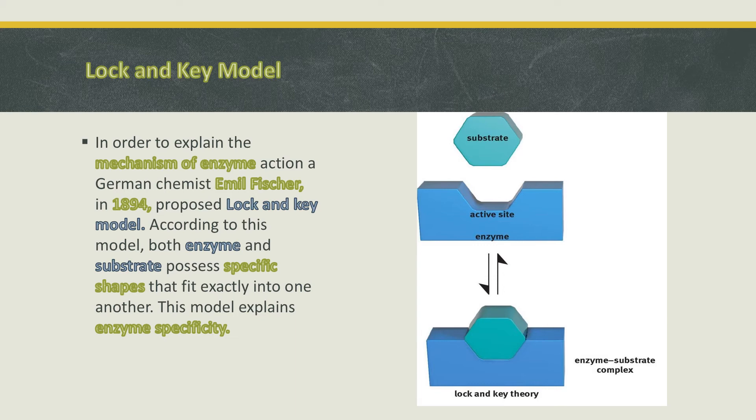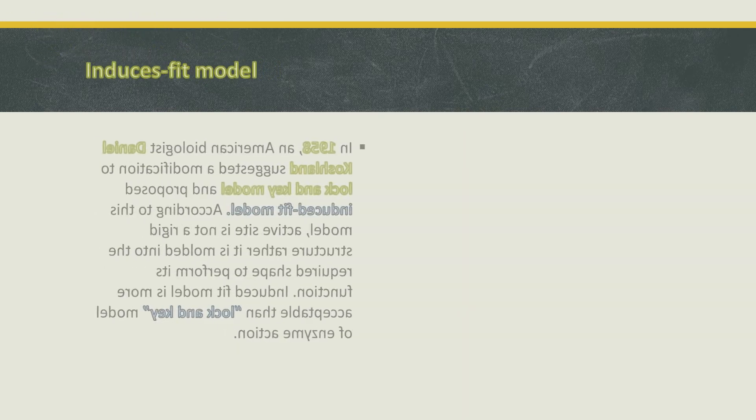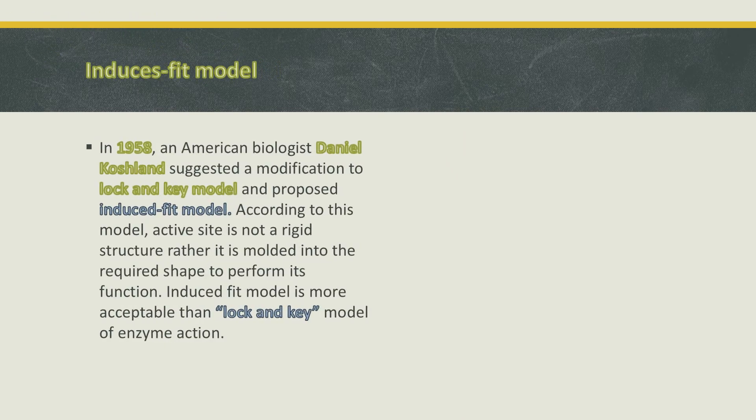Next model is Induced Fit Model. In 1958, an American biologist, Daniel Koshland, suggested a modification to Lock and Key model and proposed Induced Fit Model.